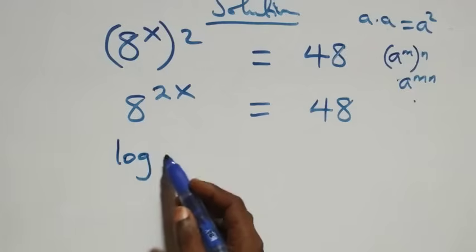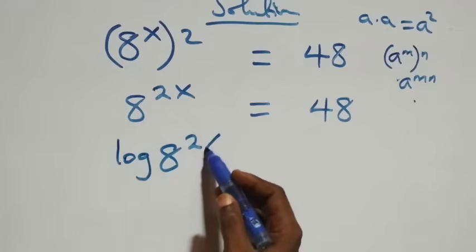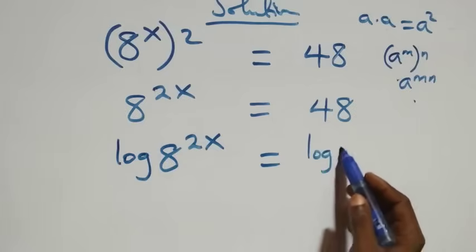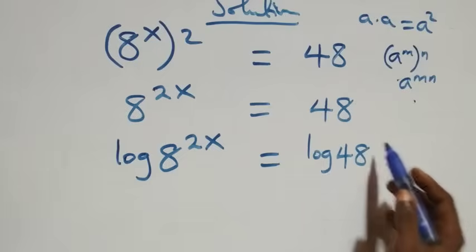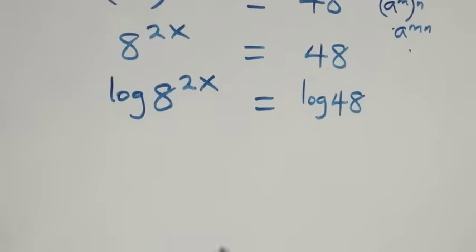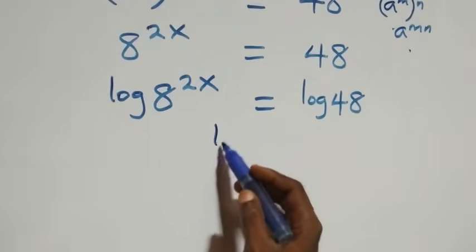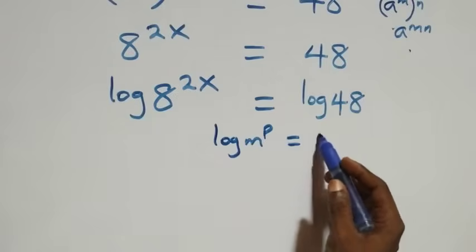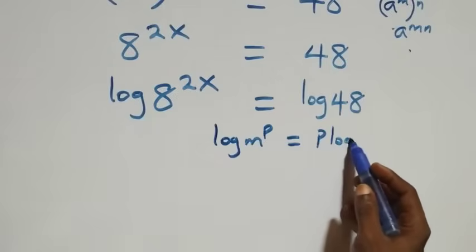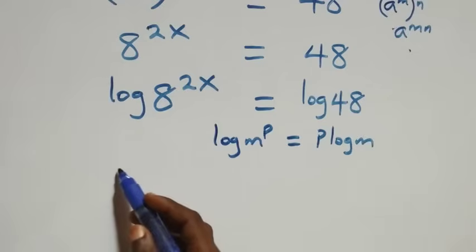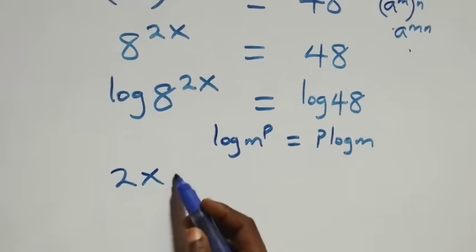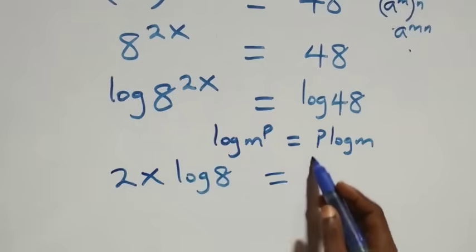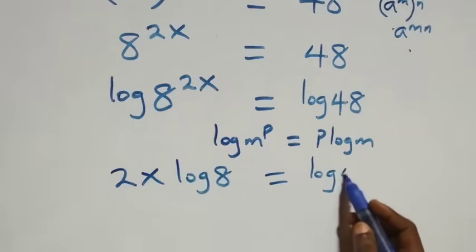Next, we take the log on both sides: log of 8 raised to power 2x equals log 48. We then apply the power rule of logarithms — log m raised to power p equals p·log m — giving us 2x·log 8 equals log 48.